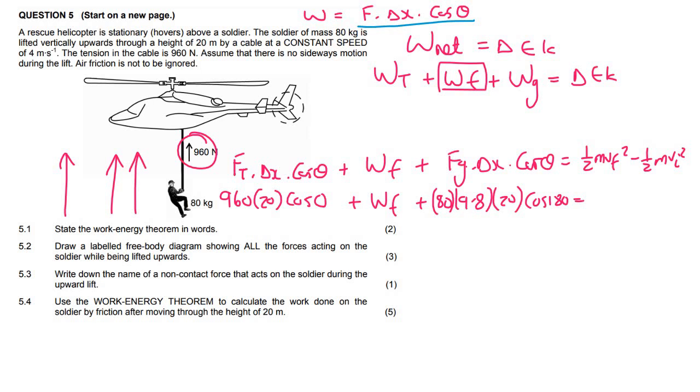What's interesting is that he's moving at a constant speed. So his final velocity and his initial velocity are going to cancel each other out. You're going to have 80, and then you're going to have a final velocity of 4, and the initial velocity is also 4. So that whole part actually cancels out.